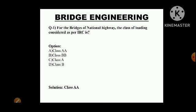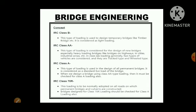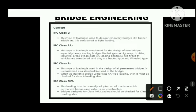First question: For the bridge of the national highway, the class of loading considered as per IRC is Class AA. As per IRC, there are different classes of loading — Class AA, Class B, Class A, and Class B. Class B loading is used to design temporary bridges like timber bridges. Class AA loading is considered for the design of new bridges, especially heavy loading bridges, and for bridges on highways in cities and industrial areas.